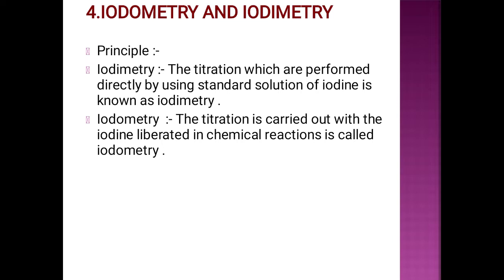The fourth type is iodimetry and iodometry. Iodimetry refers to titration performed directly using a standard solution of iodine. Iodometry refers to titration carried out with iodine liberated in a chemical reaction. In summary, iodimetry uses a direct solution of iodine, while iodometry estimates the iodine liberated in solution.